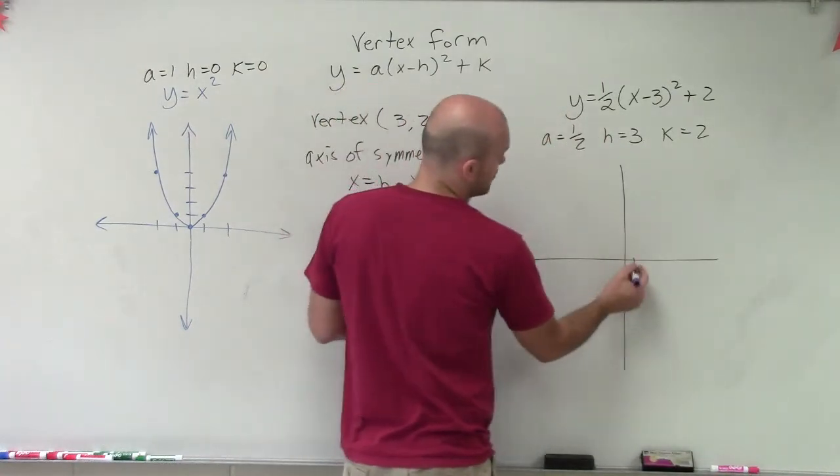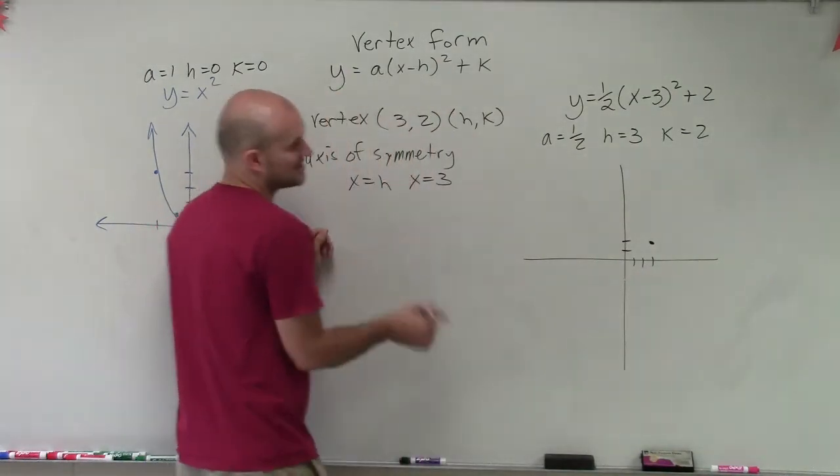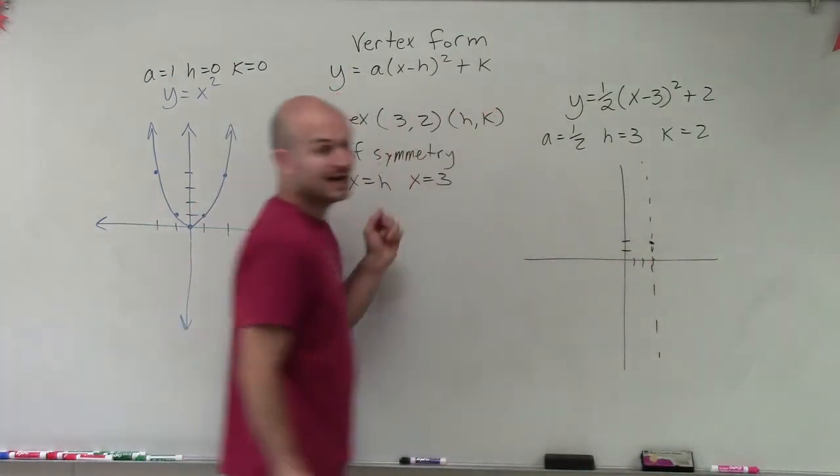So our vertex is at 3, 2. One, two, three, up two. And then my axis of symmetry is at x equals 3. So that's going to be a nice little dotted line there.